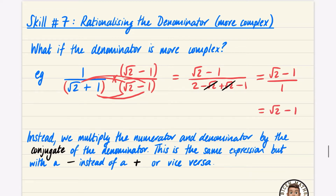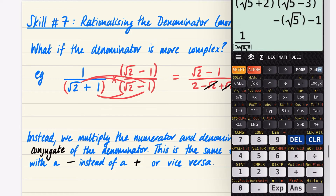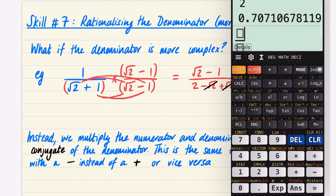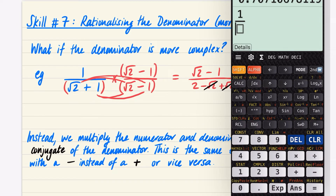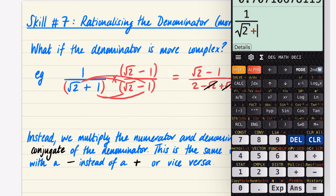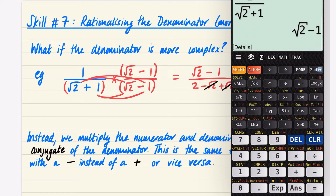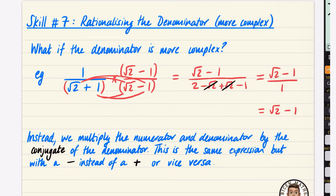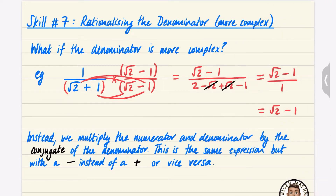So our answer is just root two minus one, because dividing by one means the number stays the same. I'm going to quickly verify this on the calculator: one divided by the square root of two plus one gives root two minus one, which matches our answer.